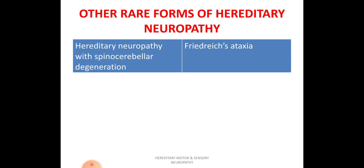Hereditary neuropathy with spinocerebellar degeneration is seen in older individuals. The features are those of Friedreich's ataxia, which affects both the musculoskeletal system and the cardiac system.